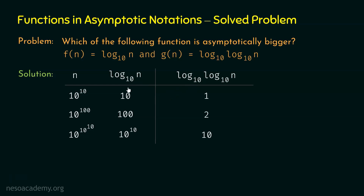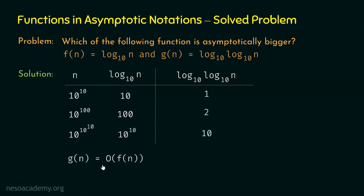We can see that f(n) is asymptotically bigger than g(n). Therefore, g(n) is equal to Big O of f(n). This means g(n) is less than or equal to c · f(n) for all values of n greater than or equal to n0. We can assume n0 as 10 to the power 10 and c as 1. So f(n) is asymptotically bigger than g(n), or in other words, g(n) is equal to Big O of f(n).